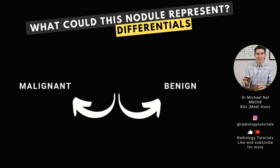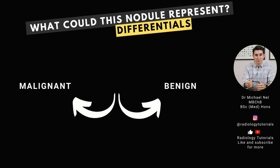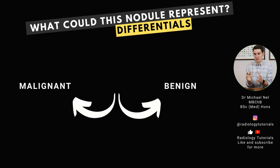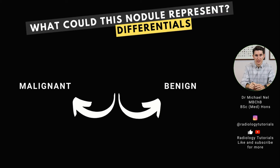The benign list is even longer. The most common is a hamartoma or an infectious granuloma, but we could also have rheumatoid nodules, lymph nodes, or arteriovenous malformation. There are also nodules seen in Wegener's granulomatosis. The list is as long as my arm for benign lesions, and often the diagnosis only happens after biopsy or if the lesion has very specific characteristics, which we'll see further on in the talk.